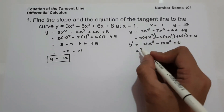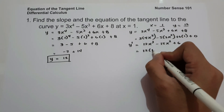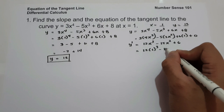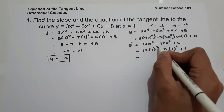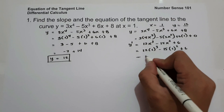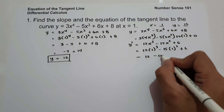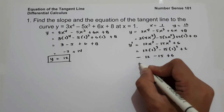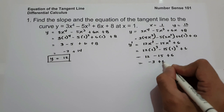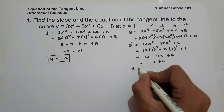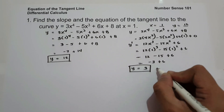Simplifying: 3 times 4 is 12x cubed, and negative 5 times 3 is negative 15x squared, plus 6. To find the slope, let us substitute x equals 1: 12 times 1 raised to 3 minus 15 times 1 squared plus 6. 1 cubed times 12 is 12, and 1 squared times negative 15 is negative 15, plus 6. So 12 minus 15 is negative 3, plus 6: the slope is positive 3.